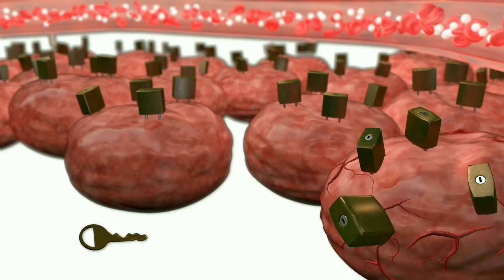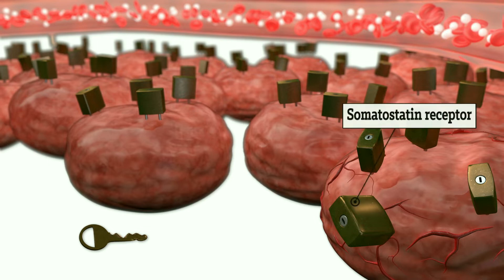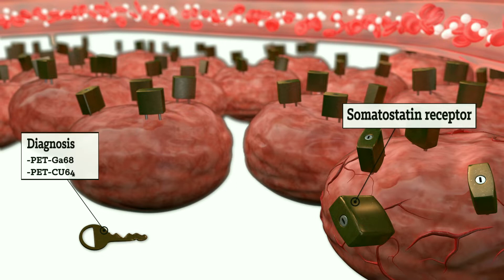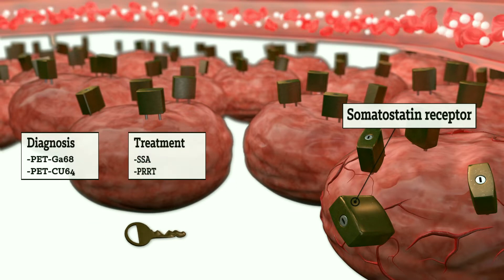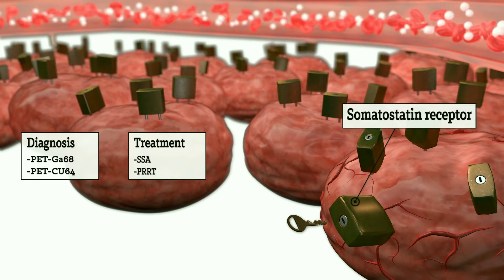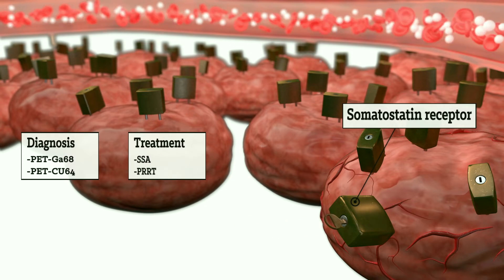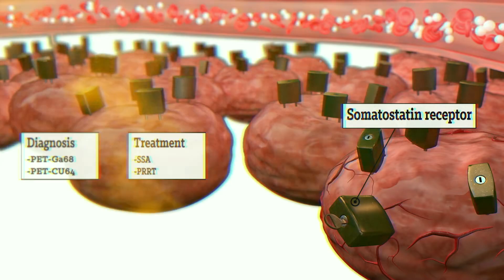I usually describe this to my patients as the lock and the key. If you have the receptors, that is the lock. And if you have them, we have a key to diagnose you — the functional imaging PET scan. But we also have different keys to specifically lock the cell from growing, which we'll discuss in the next videos, like somatostatin analogs or peptide radionuclide therapy.